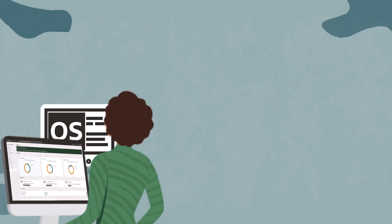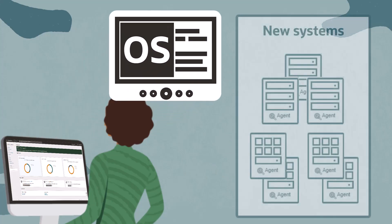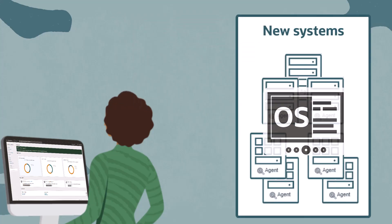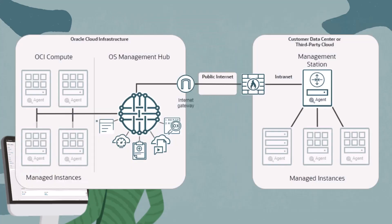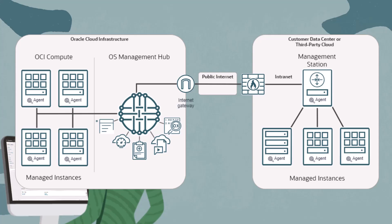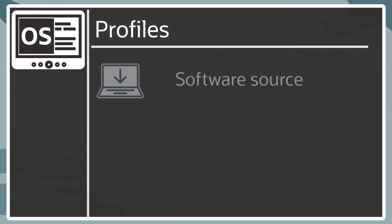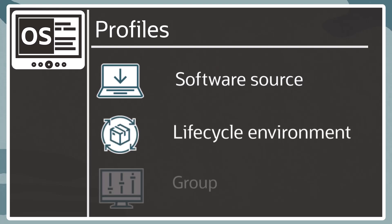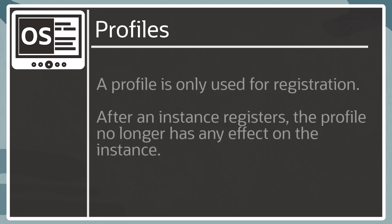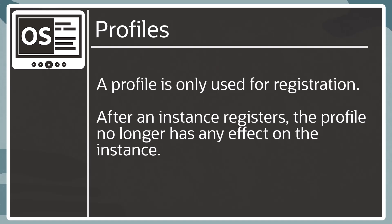A Profile is an Oracle OS Management Hub resource used during registration of OCI compute instances, systems in private data centers, or systems in supported third-party cloud. As these instances are registered with Oracle OS Management Hub, the Profile can assign OS software sources, lifecycle stage membership, or group membership. A Profile is only used for registration. After an instance registers, the profile no longer has any effect on the instance.